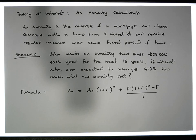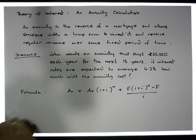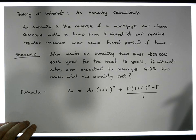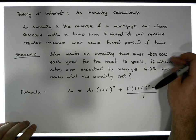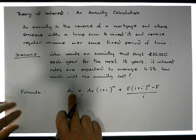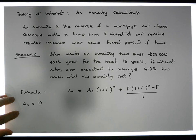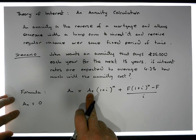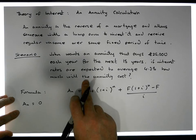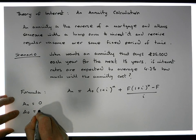Let's think about this as a bank account. After 15 years, I should have taken out all the €25,000 payments each year, so the future balance in the bank account should be zero. So in this case, when it comes to an annuity, aₙ is equal to zero. A₀ is the initial amount — that is the cost I'm looking for. So I'm looking for A₀; it's the question mark here.